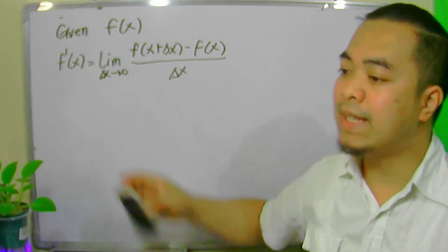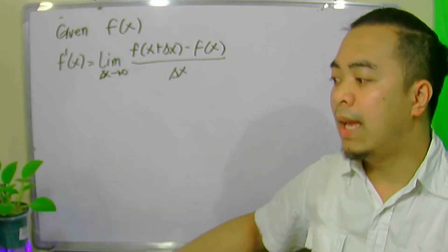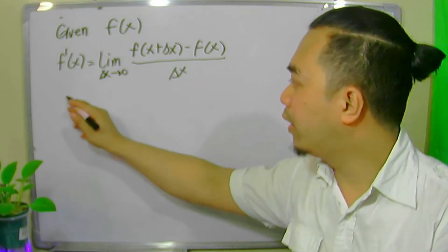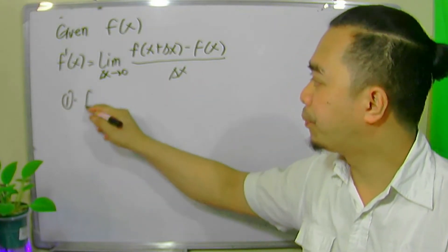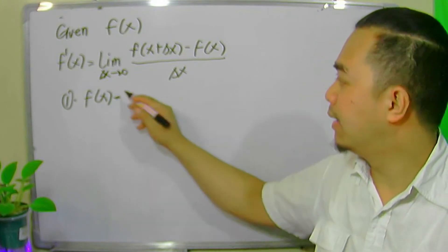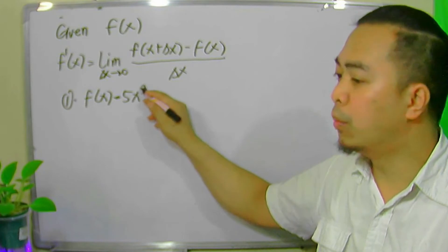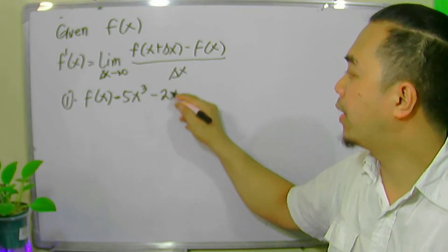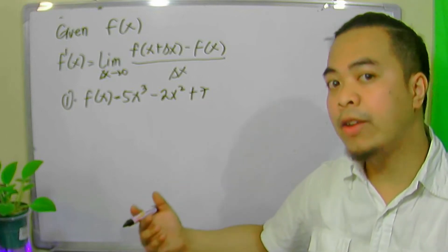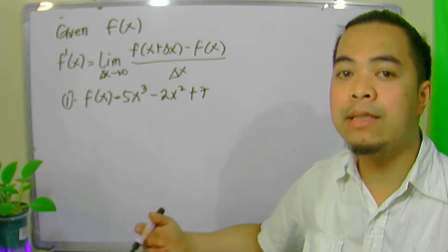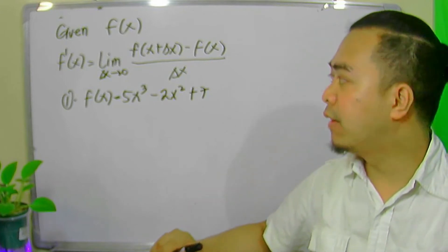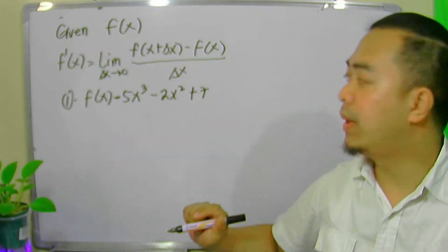So let me give you an example of a function and then we're going to compute for its derivative. So let's start with a polynomial. Our first example is 5x cubed minus 2x squared plus 7. This is the given function and our goal is to compute for its derivative using the limit definition.